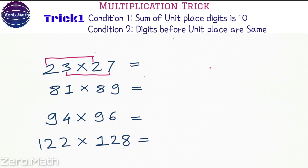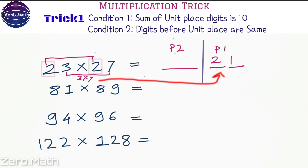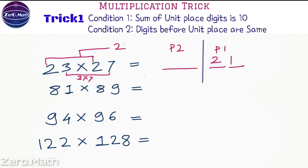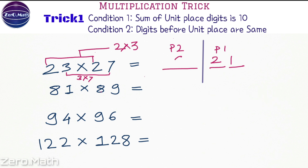I am going to divide my answer into two parts: Part 1 and Part 2. Part 1 is always going to be the multiplication of the unit place digits — that is 3 into 7, which equals 21. Part 2 will be the digit before the unit place, which is 2, multiplied by the next consecutive digit. The next consecutive digit of 2 is 3, so 2 into 3 is 6. So 621 is our answer. You can verify the same with the calculator.